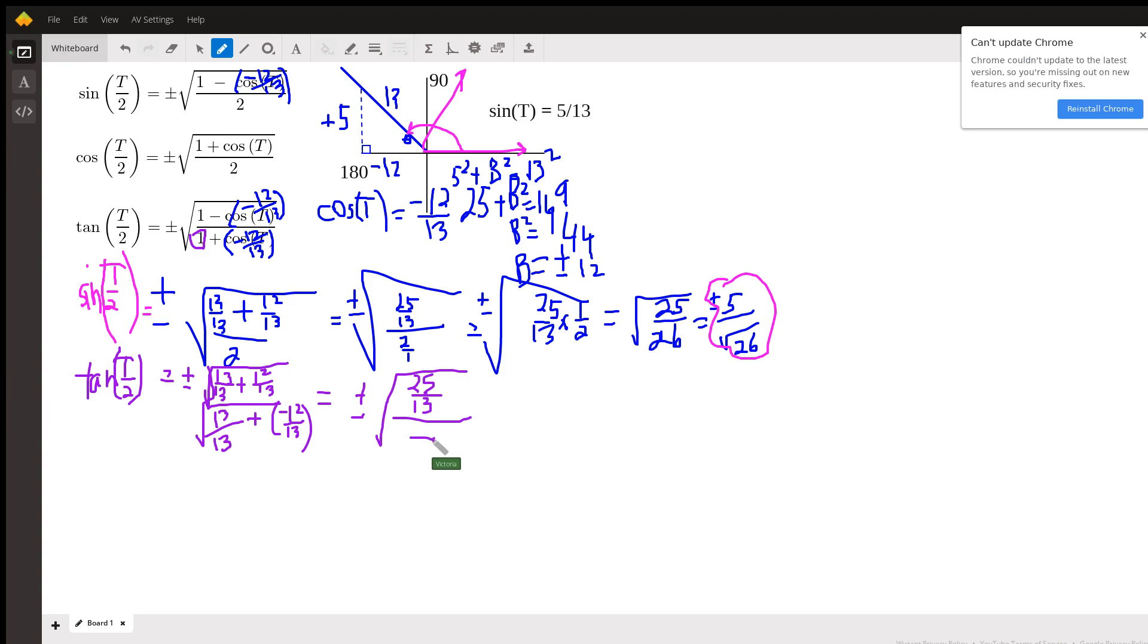And now if I multiply the top by 13 over 1, and I multiply the bottom by 13 over 1, well, that gets rid of this fraction, and it gets rid of this fraction. And this becomes plus or minus the square root of what's left up here is 25, and what's left on the bottom is 1, which is plus or minus the square root of 25, which is plus or minus 5. So this is the tangent of theta over 2.